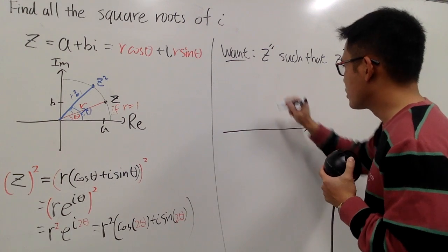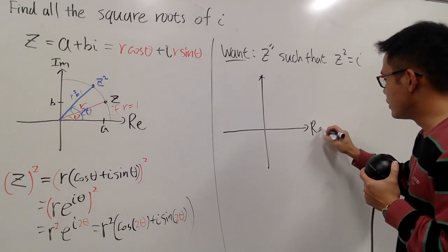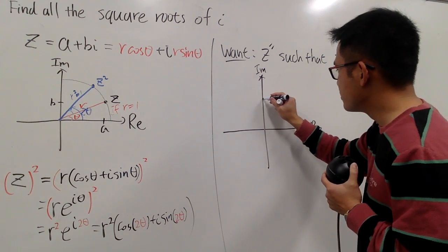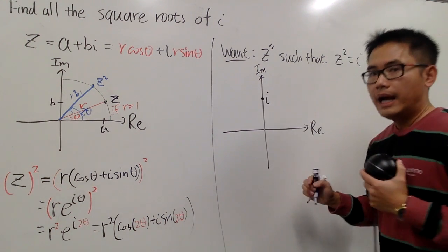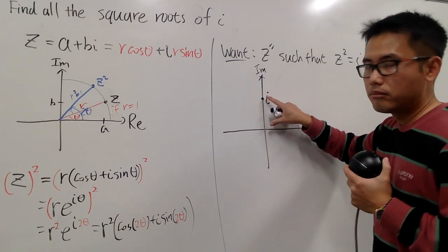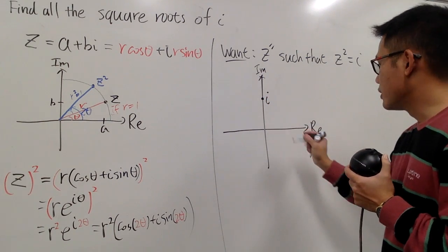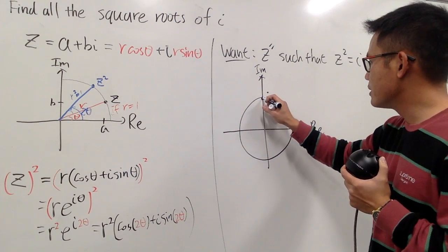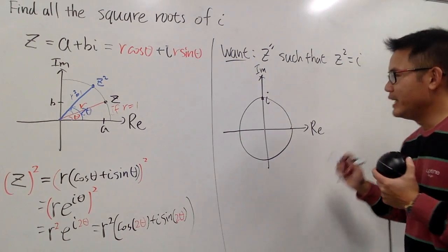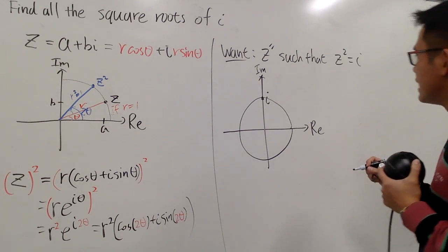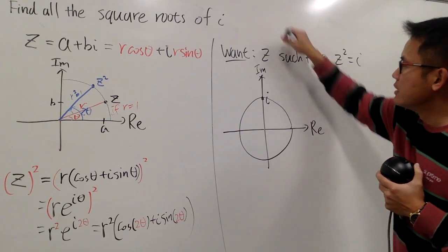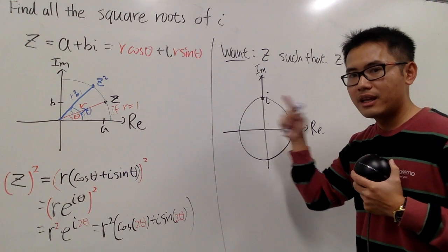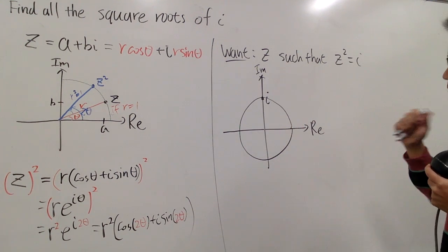So let's take a look of the complex plane again. Here is the real and here is the imaginary. I want to get to i. So let me just put on i being right here. And you know the distance from here to here is just 1, because this is 0 plus 1i. So if you would like, you can put on a unit circle, nicely right here. That's nice because when r is 1, that's nice. Anyway, now the deal is that I want to find z so that when I turn, turn, turn, turn, I will end up with i. That's what it is.